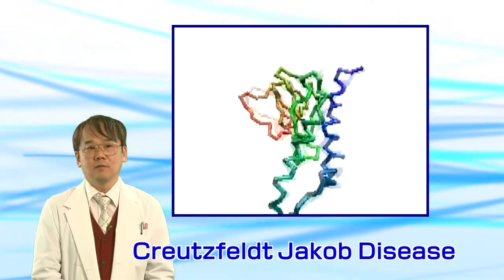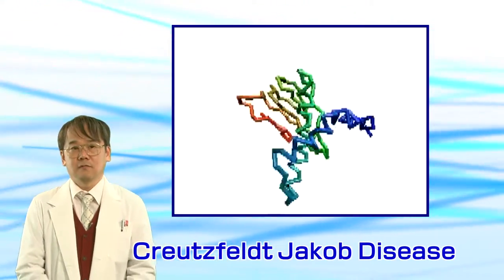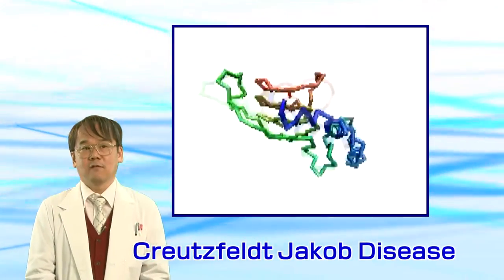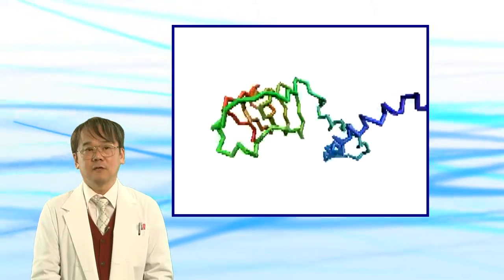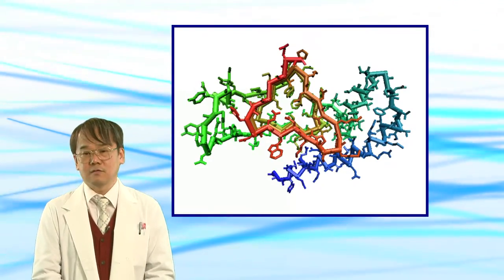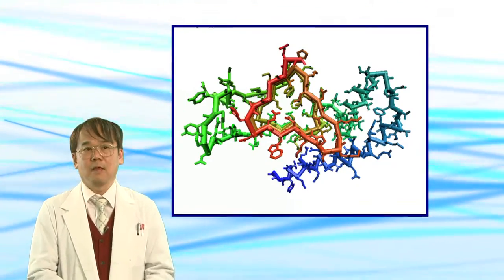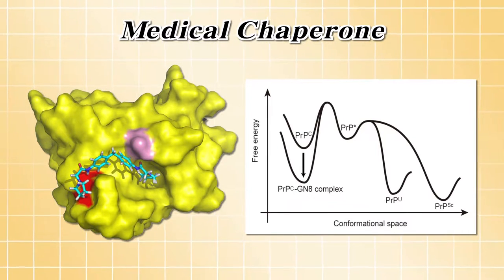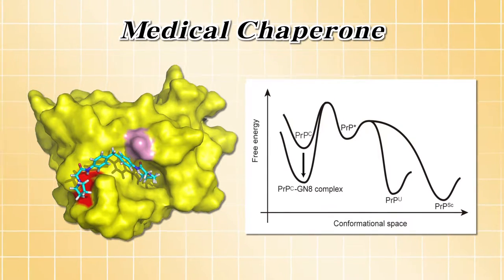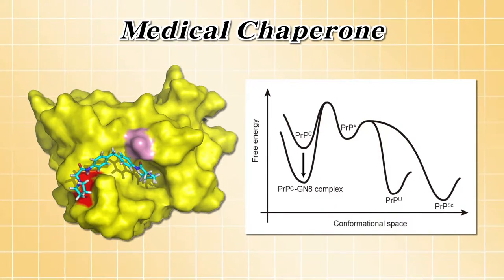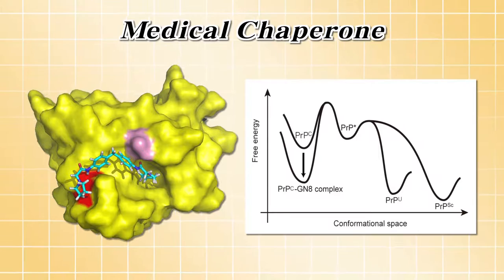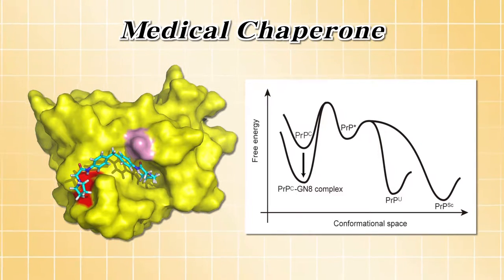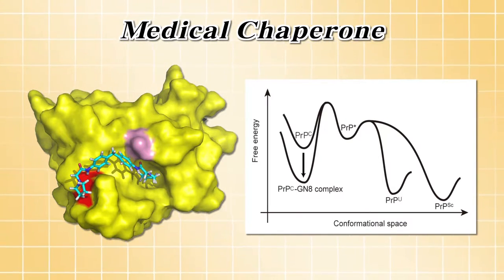Creutzfeldt-Jakob disease is one of the prion diseases, which is caused by the conversion of the cellular form of prion protein to the scrapie form. But there are more than billions of scrapie forms, called strains. So we target the cellular form and stabilize its conformation by the design of a compound termed a medical chaperone.